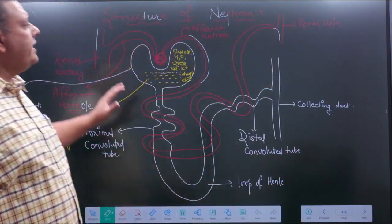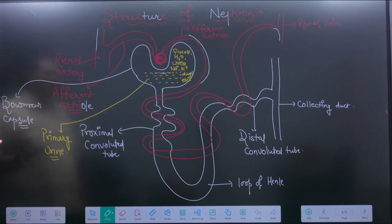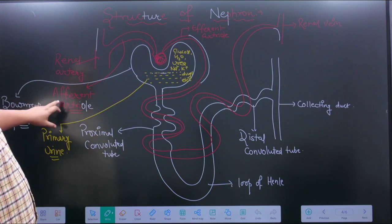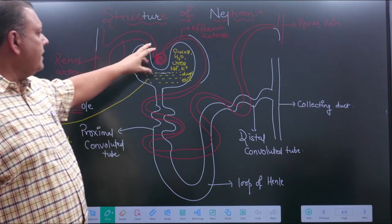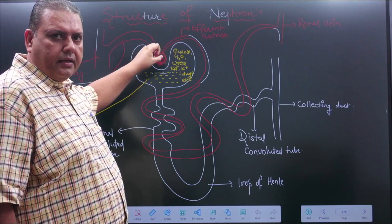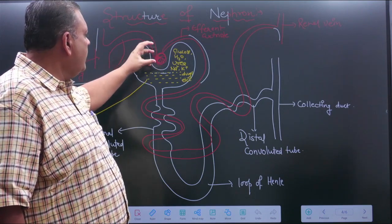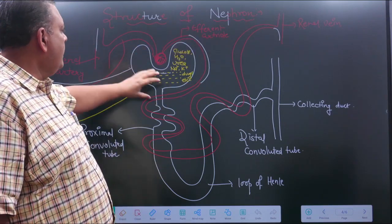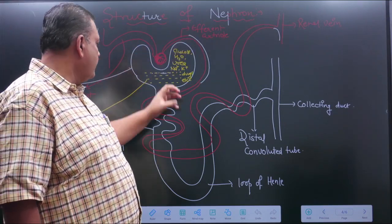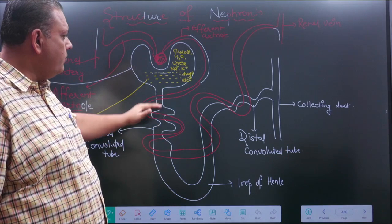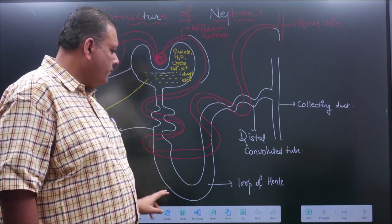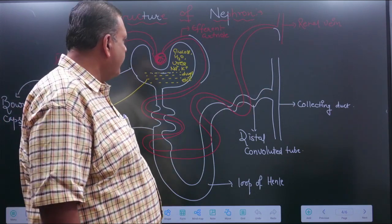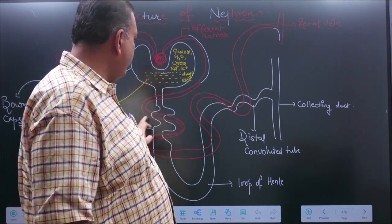The actual structure of the nephron: the renal artery further divides into branches forming the afferent arteriole, which leads to the formation of a membranous structure called the glomerulus. This is enclosed by a capsule-like structure called the Bowman's capsule. Furthermore, the tubular part includes the proximal convoluted tube, loop of Henle, distal convoluted tube, and collecting duct. The efferent arteriole carries blood away from the glomerulus.